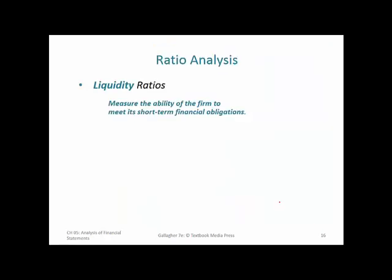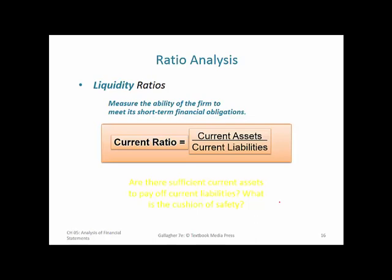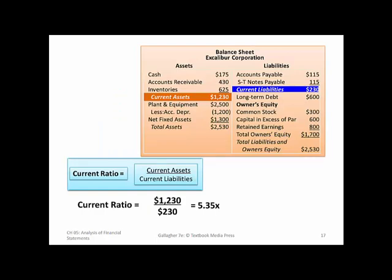Now let's talk about liquidity ratios. Liquidity ratios measure the ability of the firm to meet its short-term financial obligations — how much cash it has or can have in a short period to pay current liabilities. The current ratio is simply all current assets divided by all current liabilities. If this is less than one, the company's probably in trouble. Excalibur has $1.2 billion in current assets and only $230 million in current liabilities, giving a current ratio of over five — very healthy.